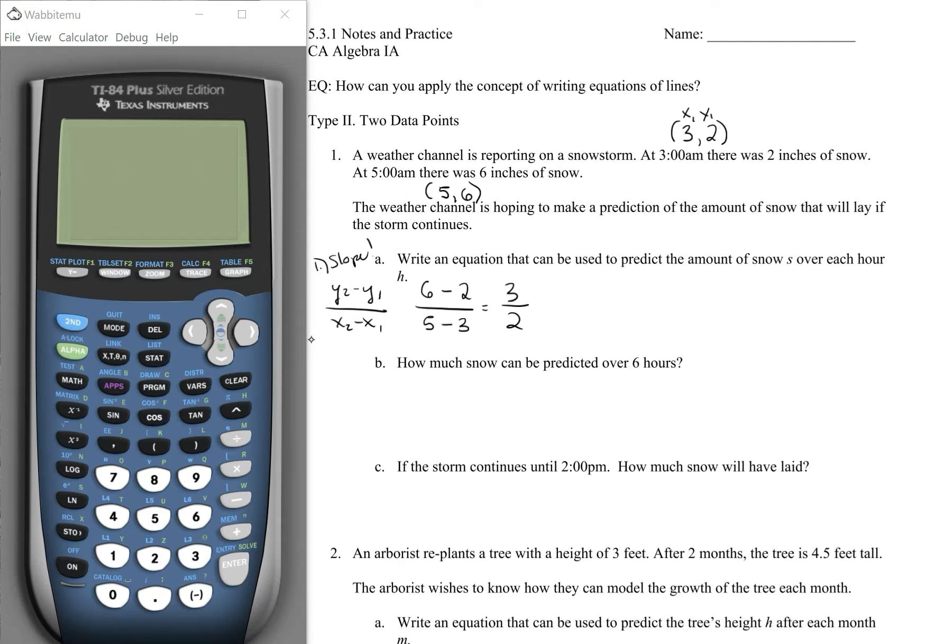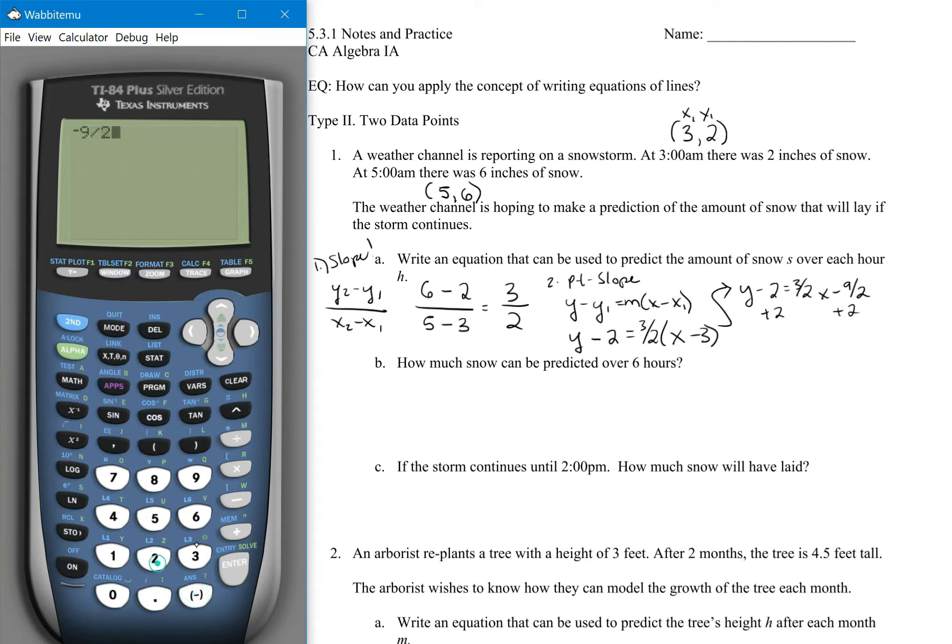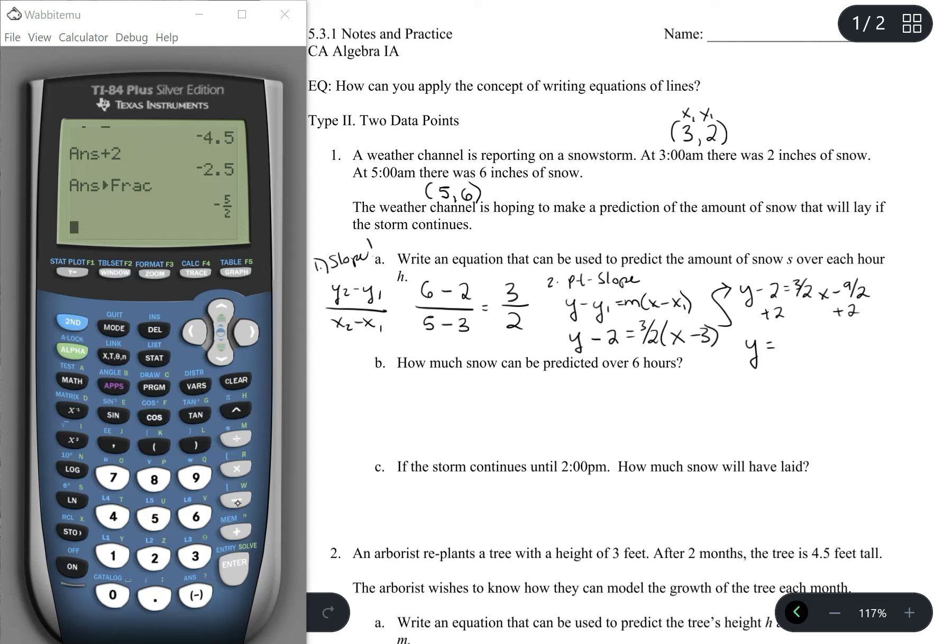Now, with that, we then need to use point slope form, which was y minus y1 equals m times x minus x1. So once again, y minus 2 is equal to our 3 halves times x minus 3. And if we follow that process, it's looking like y minus 2 is equal to 3 halves x minus 9 halves. We'll leave it as a fraction. And I'm going to add 2 to 9 halves. Plus 2 means I have negative 5 halves. And that is our equation. Y equals 3 halves x minus 5 halves.